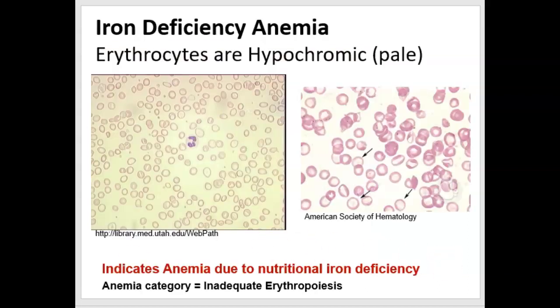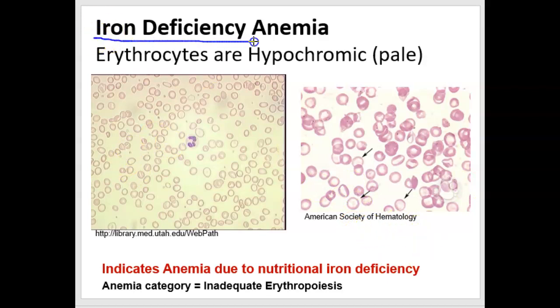In iron deficiency anemia, you might see lots of red blood cells and not necessarily have a low hematocrit — the hematocrit could be normal or even higher for compensation. The problem is that the hemoglobin can't bind oxygen due to inadequate iron in the diet. These cells don't have normal heme, they don't look dark-staining — they're very pale. That's iron deficiency anemia.